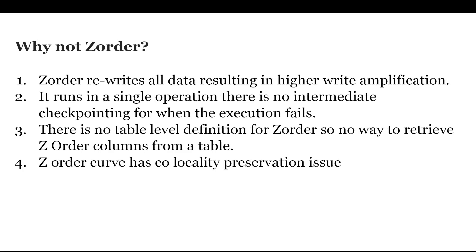Z-order is a single operation — you simply say ZORDER BY — and there is no checkpointing. So if Z-order fails, there is no intermediate checkpoint to resume from. Additionally, there is no table-level definition that tells you which columns a Delta table was Z-ordered on; looking at table A, you cannot determine which columns it was Z-ordered on. Also, the Z-order curve has co-locality preservation issues.